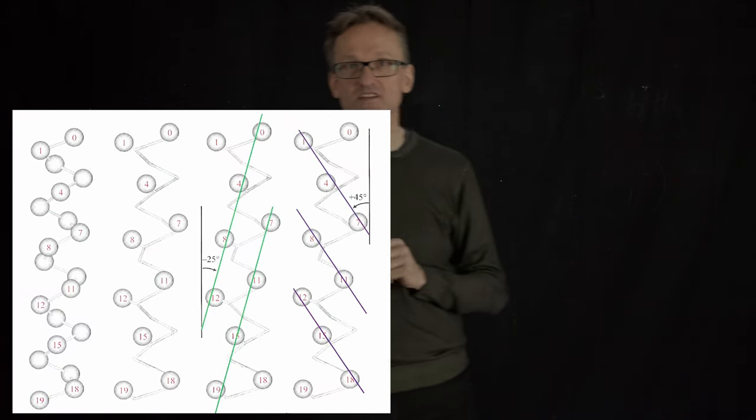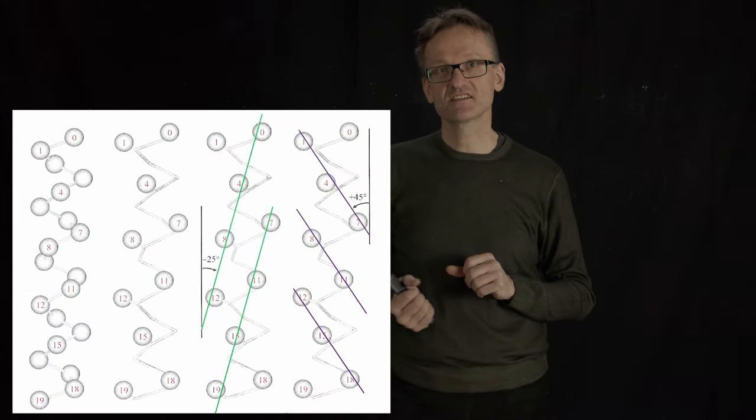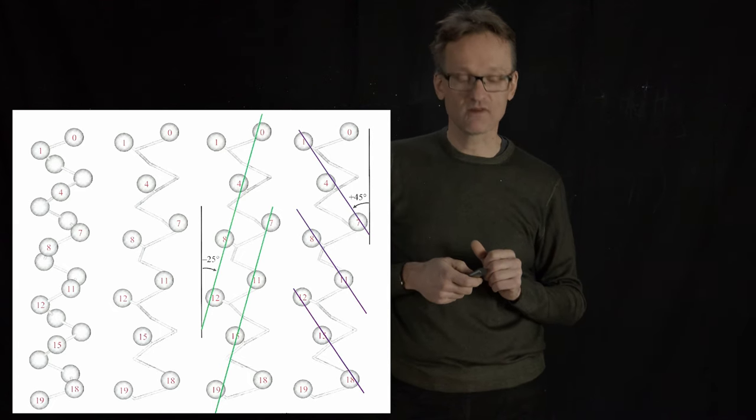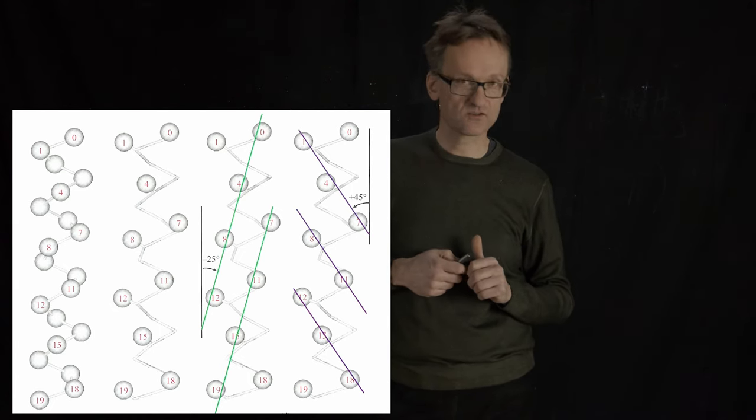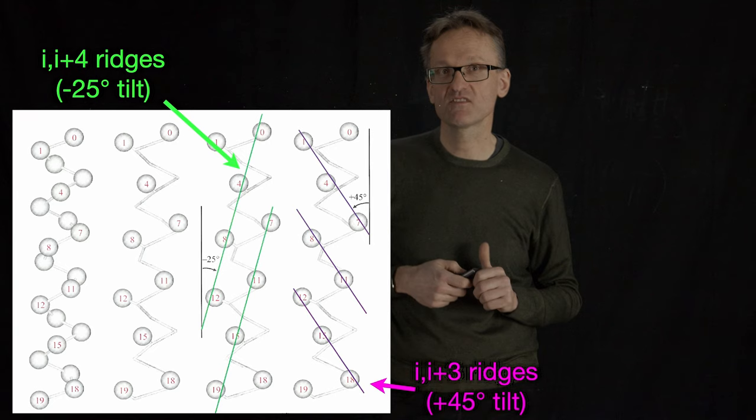What that is going to lead to is that if I take a structure like this, there are edges either in roughly 25 degrees or minus 45 degrees, or minus 25 and plus 45 degrees.